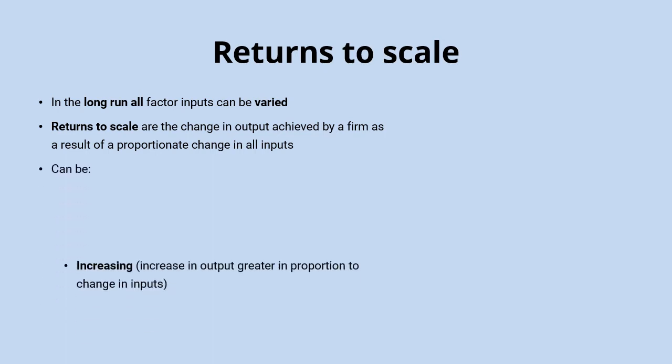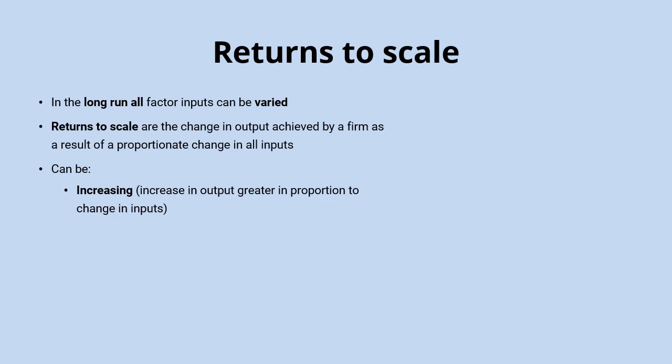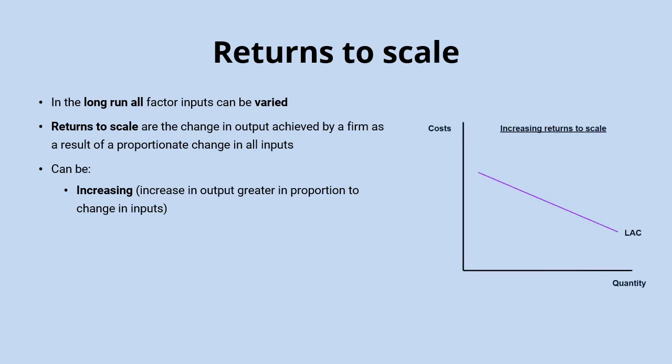There can be increasing returns to scale, where an increase in output is greater in proportion to that change in inputs. This can be seen on a downward sloping long run average cost curve, because output is increasing more than the increase in inputs, and so the cost per unit is likely to be coming down as quantity of output increases.